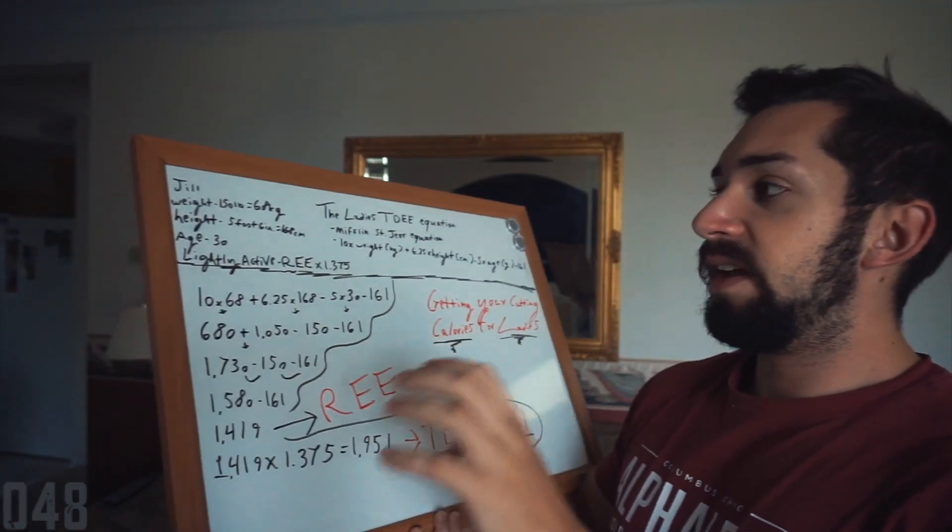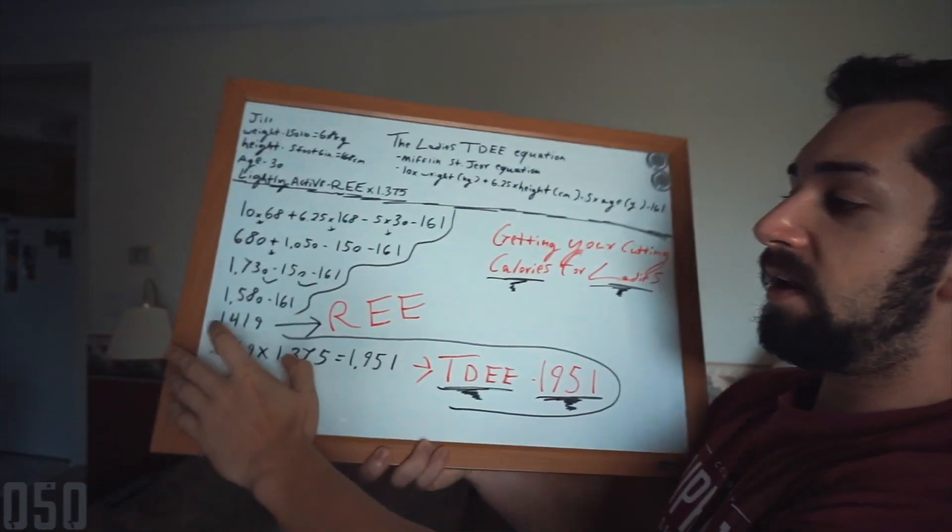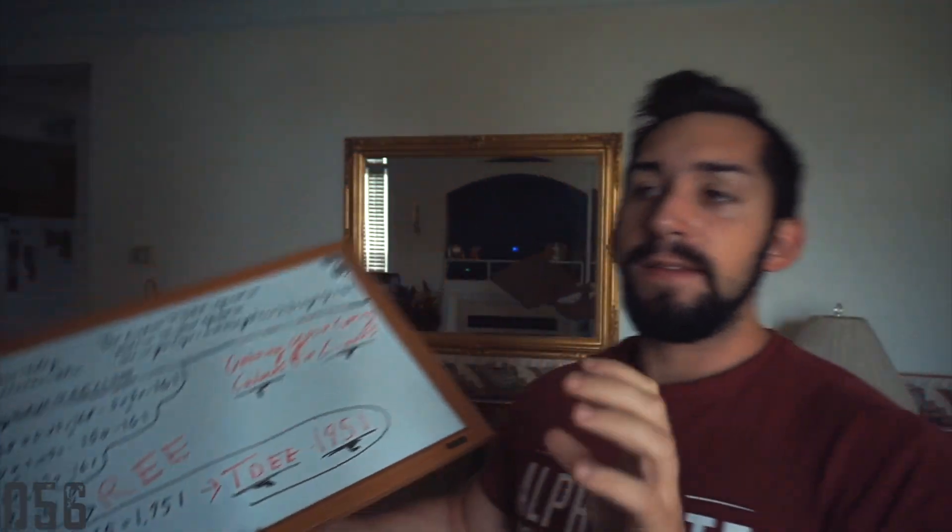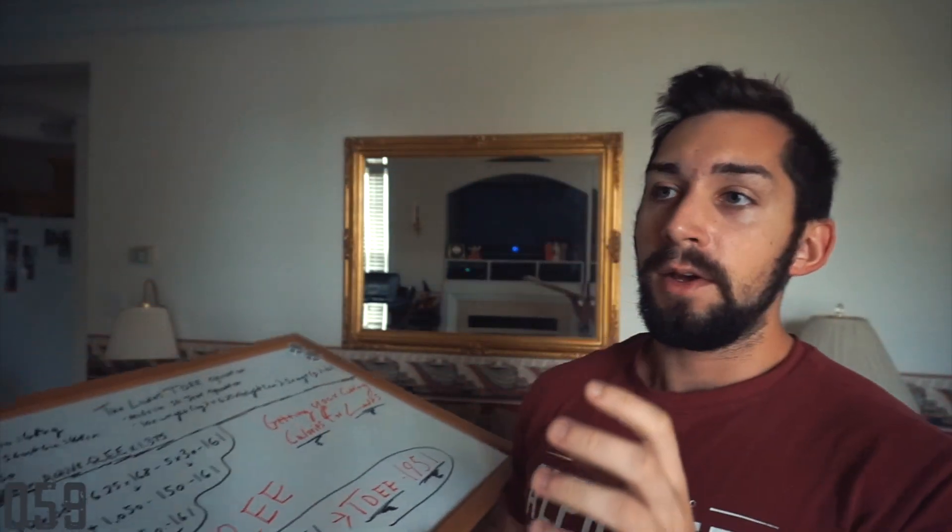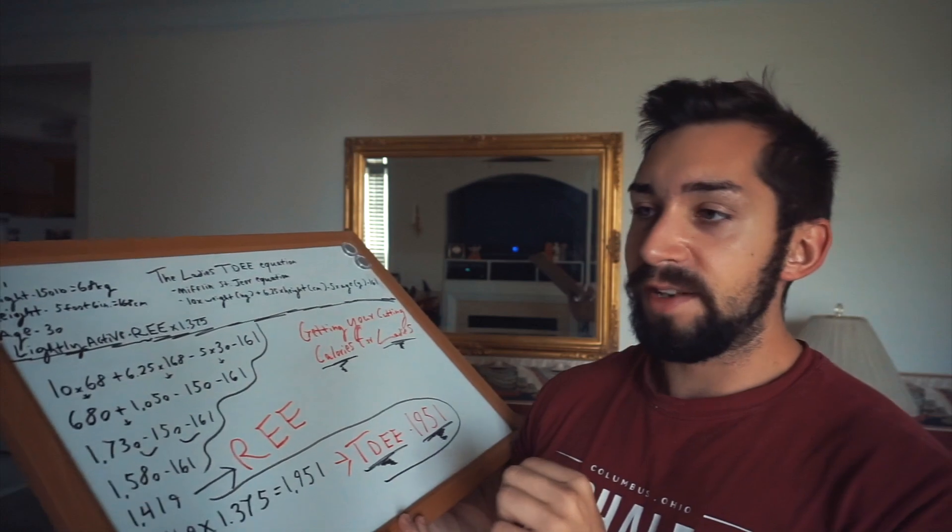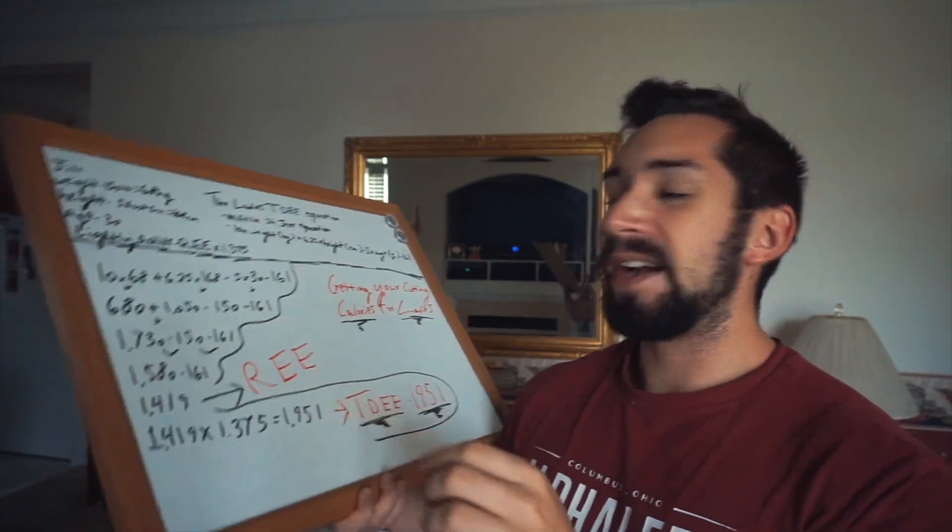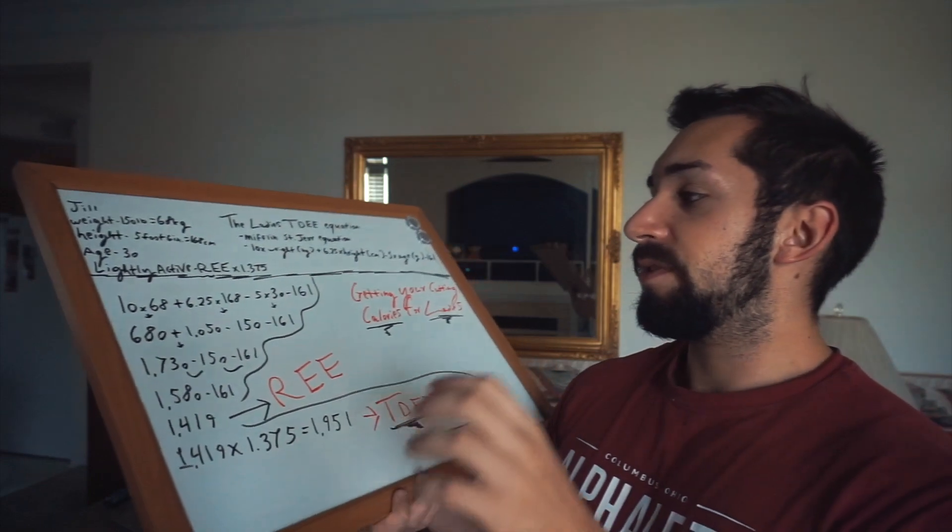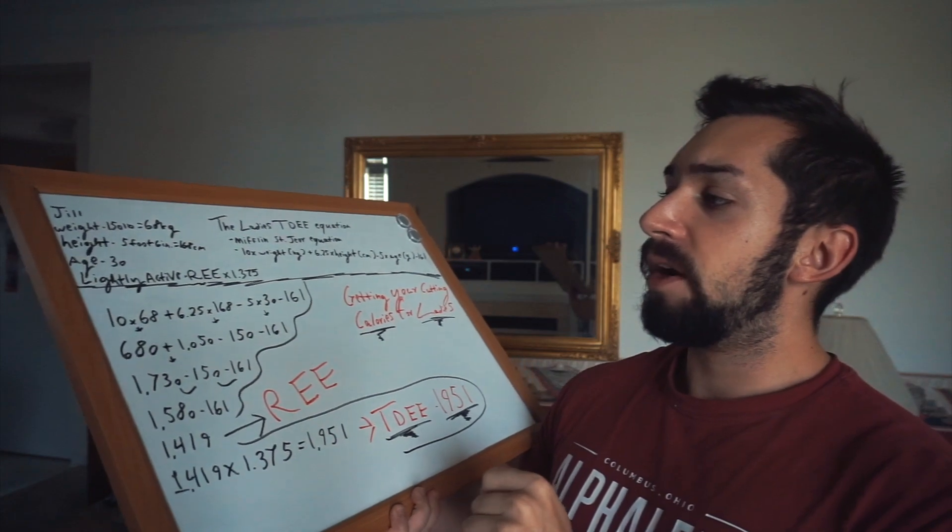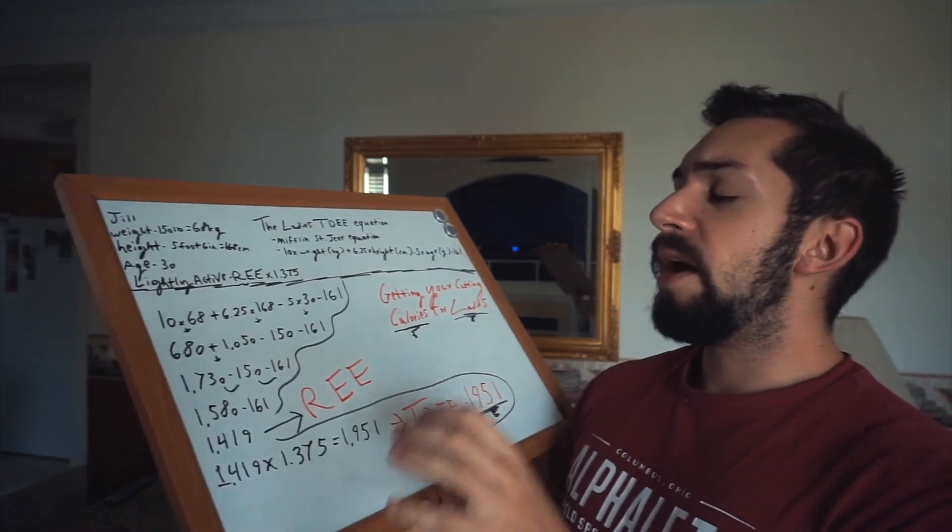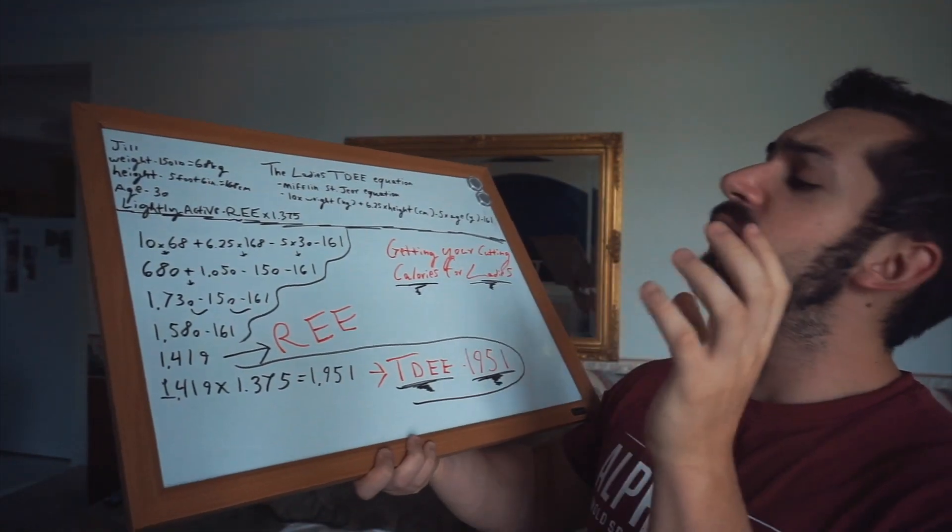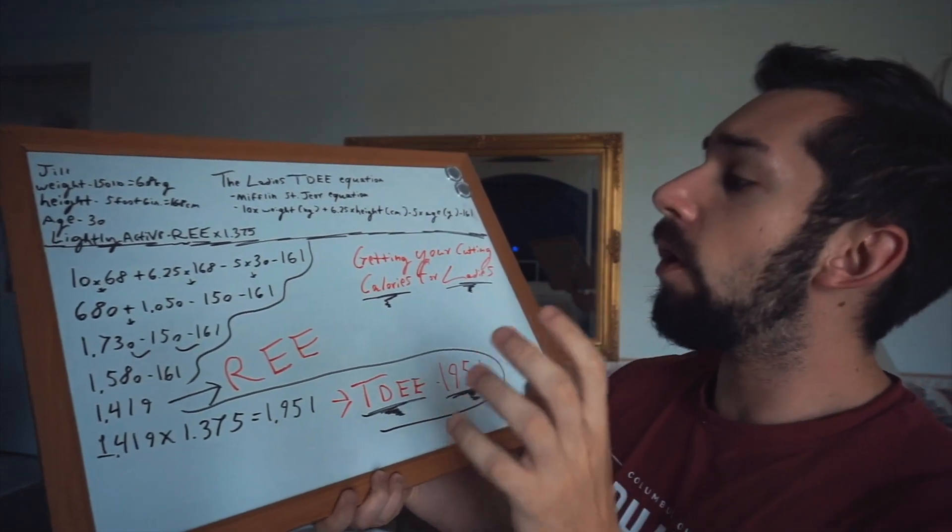We went over this last time, but to get your TDEE you have to multiply your REE, which is 1419 for Jill here, times your activity level. There are four different activity levels. There's sedentary. If you're sedentary you're going to multiply your REE times 1.25. Then there's lightly active, which Jill is. Lightly active you're gonna multiply your REE by 1.375. Then there is moderately active. Moderately active you're going to multiply your REE by 1.55. Then there is highly active guys. If you are highly active, which don't lie to yourself, but if you are highly active you want to multiply your REE times 1.725.